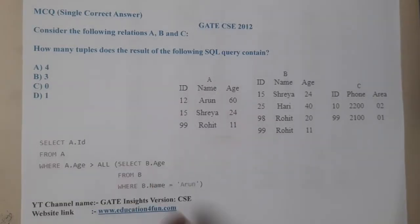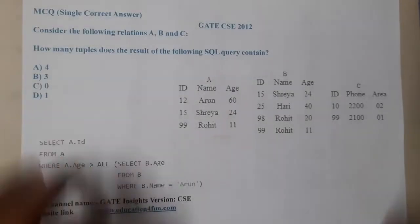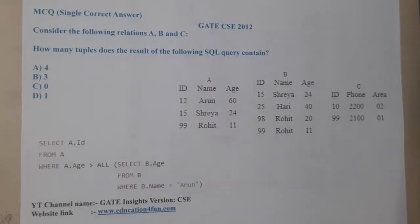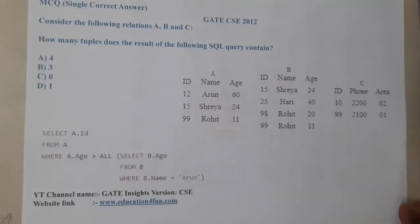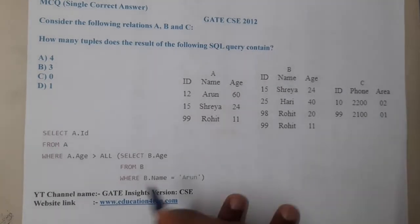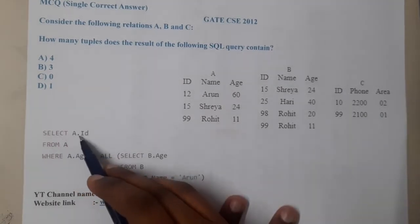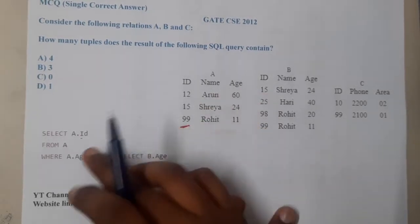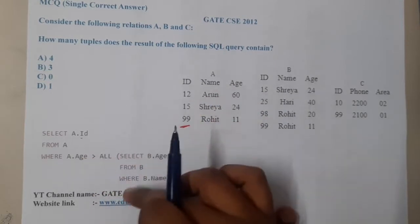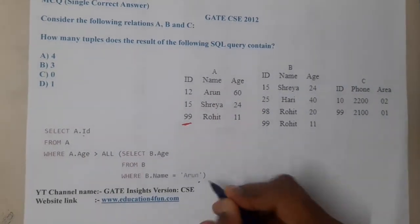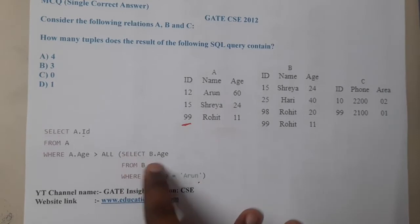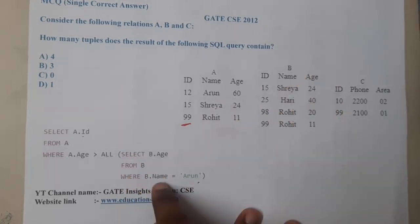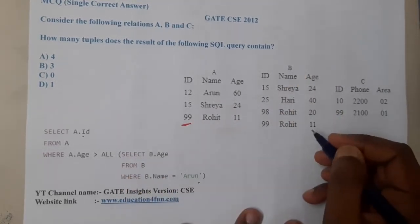Let us first try to solve this using SQL, since we like SQL the most. So first we are trying to perform: SELECT A dot id FROM table A WHERE A dot h should be greater than ALL — and now let us find the subquery result, which is: SELECT B dot h FROM table B WHERE B dot name equals 'Arjun'.